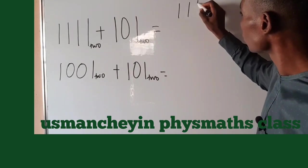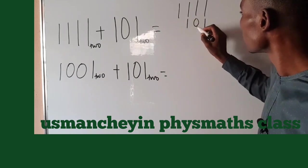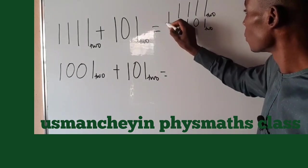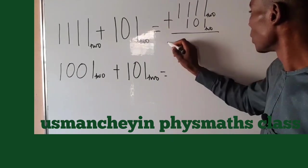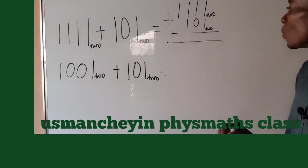All right, so let's see this. We first of all arrange this number. We have 1111₂, then we have 101₂. This is in base two. Then we have plus. Draw the line for this.